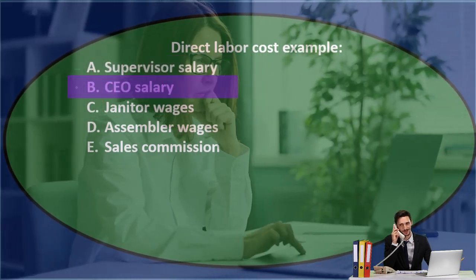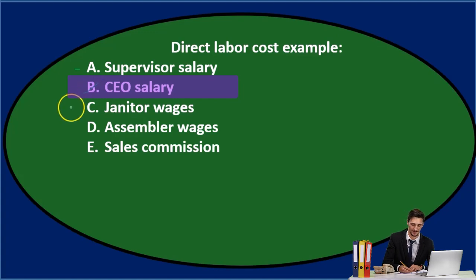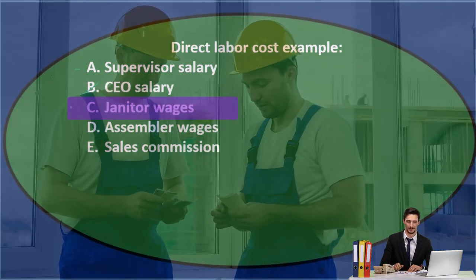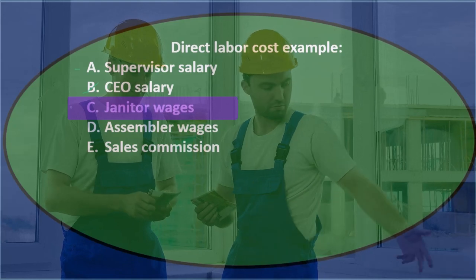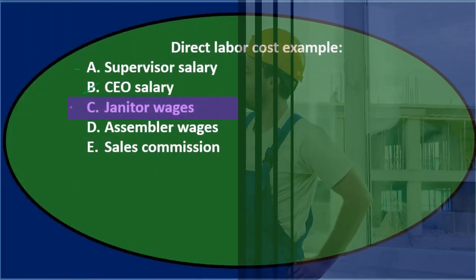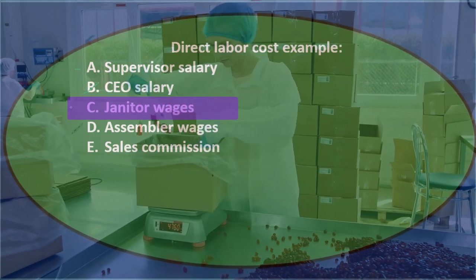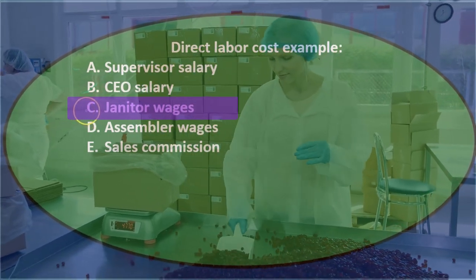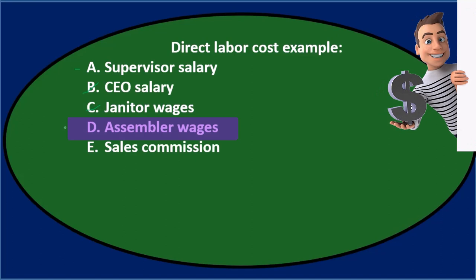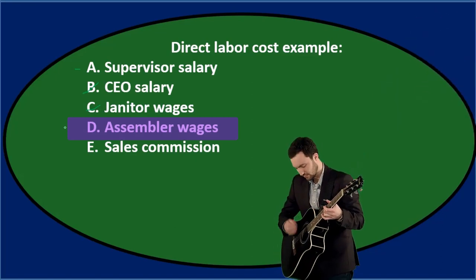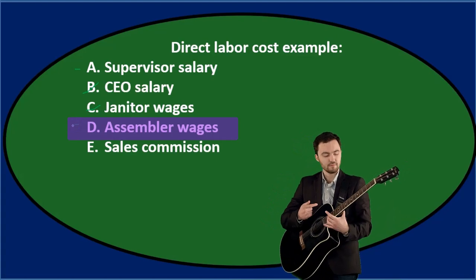A) supervisor salary — I'll keep that for now. B) CEO salary — the CEO is probably not working on specific jobs in the warehouse, so it's not B. C) janitor wages — the janitor may be in the factory, but we don't know which job they're supporting; they're cleaning the whole factory, which benefits the entire production process, so that goes to overhead. D) assembler wages — you can't get much more direct than that. If we're making guitars, they're the ones making the guitars — that has to be it.